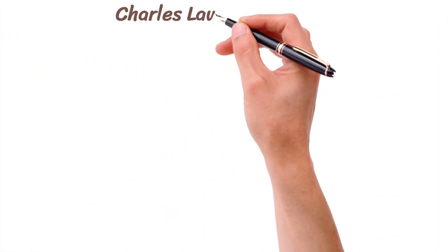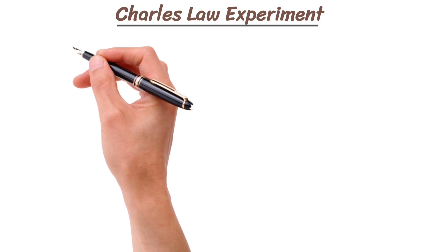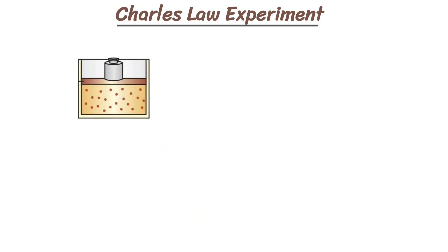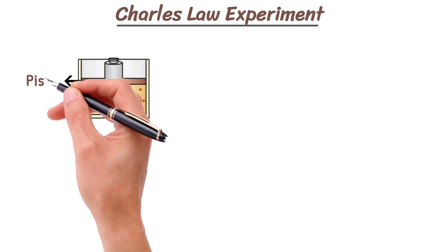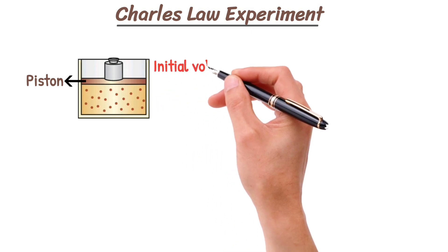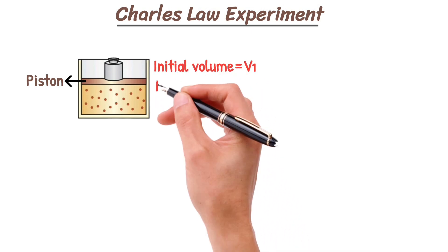Let me explain Charles's Law by experiment. Let us consider a certain amount of a gas enclosed in a cylinder fitted with a movable piston. The initial volume of the gas is V1, and its temperature is T1.